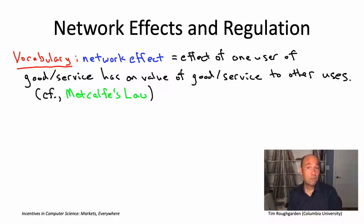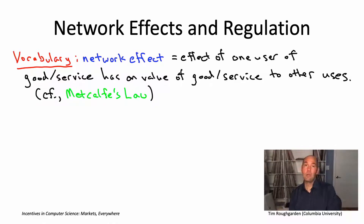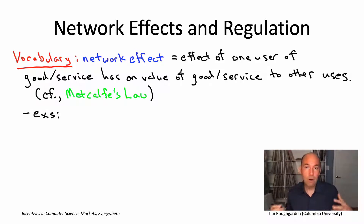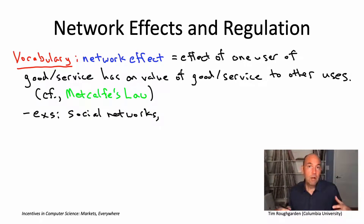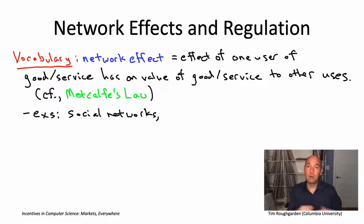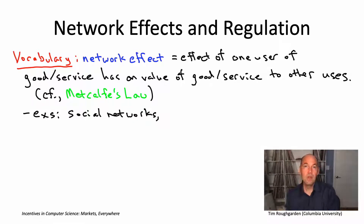Now, the platforms we've been discussing, for the most part, exhibit very strong network effects. So for example, should we be surprised that one or a few social networks are so dominant? Well, no, because there are very strong network effects — you want to use the social network that your friends are using. So naturally, you have everybody piling into the same social network because of the network effects.